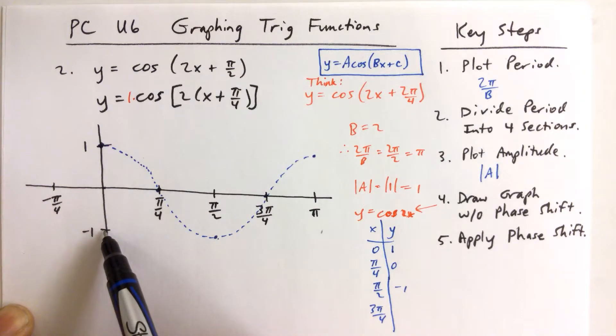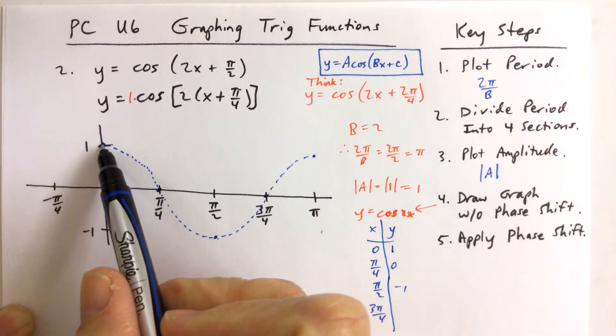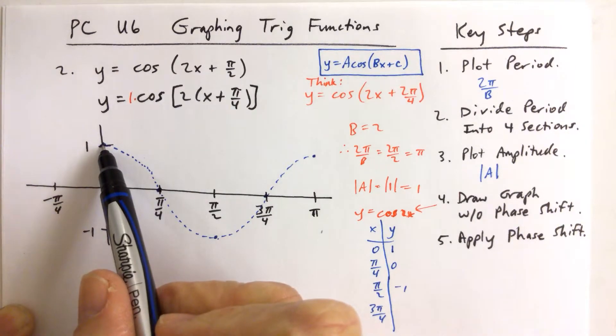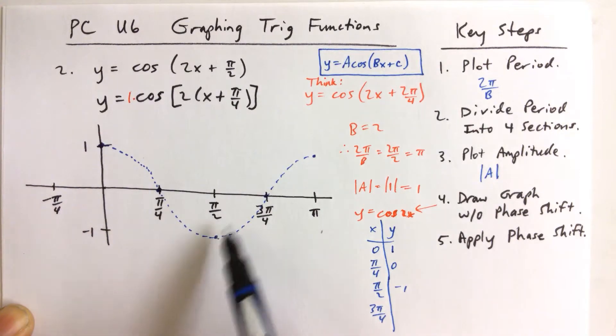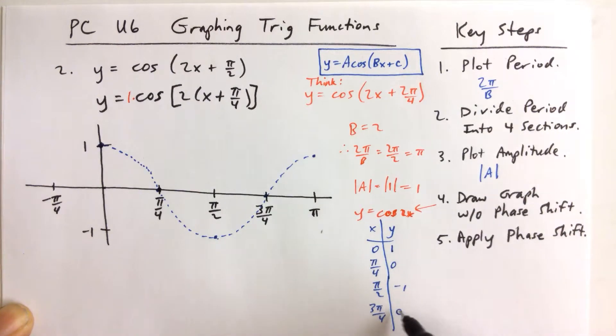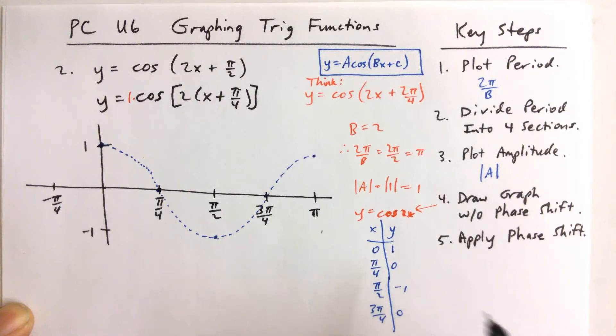But the points are always going to be, for cosine, it's always going to start on top if a is positive, on the bottom if a is negative. And then when you're here, you go down to the next x value and you go to the next y coordinate. If it starts up here at 1, the next one's going to be 0, negative 1, 0, and back to 1.